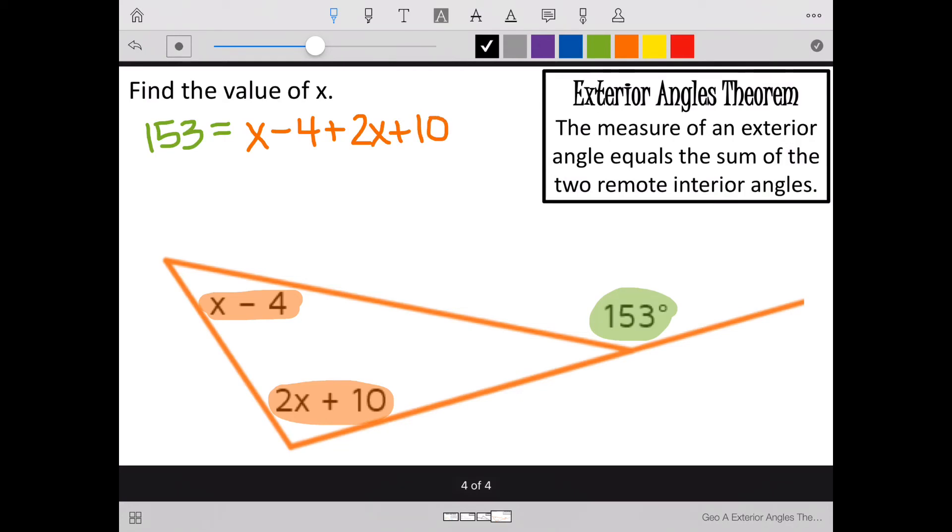Now let's keep going with this equation. Put my x's together. 1 plus 2 makes 3x. Put my numbers together. Negative 4 plus 10 makes 6. Now if I subtract 6 from each side, I have 147. And divide by 3 on each side. So 147 divided by 3 makes 49. So x equals 49.